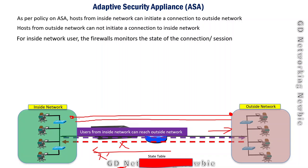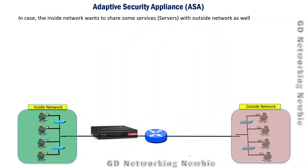These firewalls maintain state information in a state table. If a user requests specific information and traffic comes back that actually belongs to that session, that information will be allowed because it is part of the request made by inside network users. With the help of the state table, the firewall can allow that specific traffic. This is known as stateful inspection, and it is possible with the ASA 5500 series firewall.